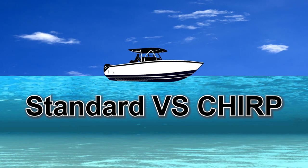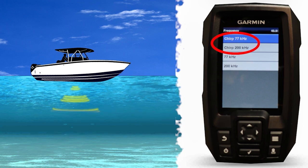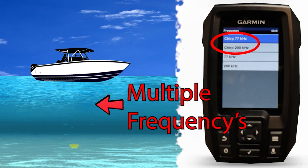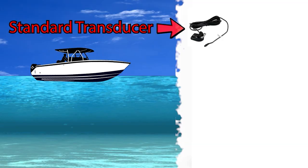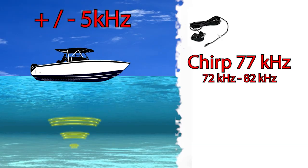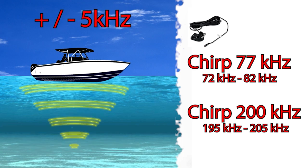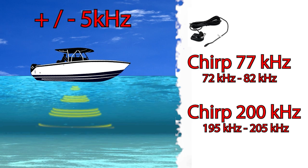Now let's look at the chirp frequency selections. Chirp sonar differs from single frequency selection in one major way: while single frequency selections saturate the water column with pulses in one frequency band, chirp sonar uses multiple bands at the same time, resulting in better target separation and clearer sonar images. On the Garmin Striker, the cone angles do not change with chirp — 77 kHz chirp is still about 45 degrees and 200 kHz chirp is still about 15 degrees. The only difference is that chirp uses a band of frequencies. With the standard transducer, the 77 kHz chirp sweeps between 72 kHz and 82 kHz, while the 200 kHz chirp sweeps from 195 kHz to 205 kHz.